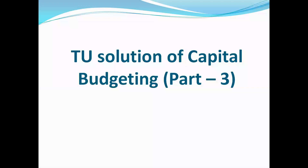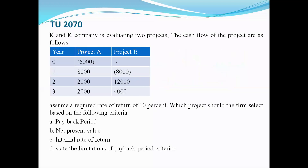We are evaluating two projects. The cash flows of the projects are as follows: Project A and Project B. At period zero, the cash flow is negative. For years one, two, and three, the cash flows are positive. For Project B, at period zero it is minus eight thousand, and years two and three are positive. The required rate of return and cost of capital is 10 percent. Which project should the firm select based on payback period, NPV, or IRR?